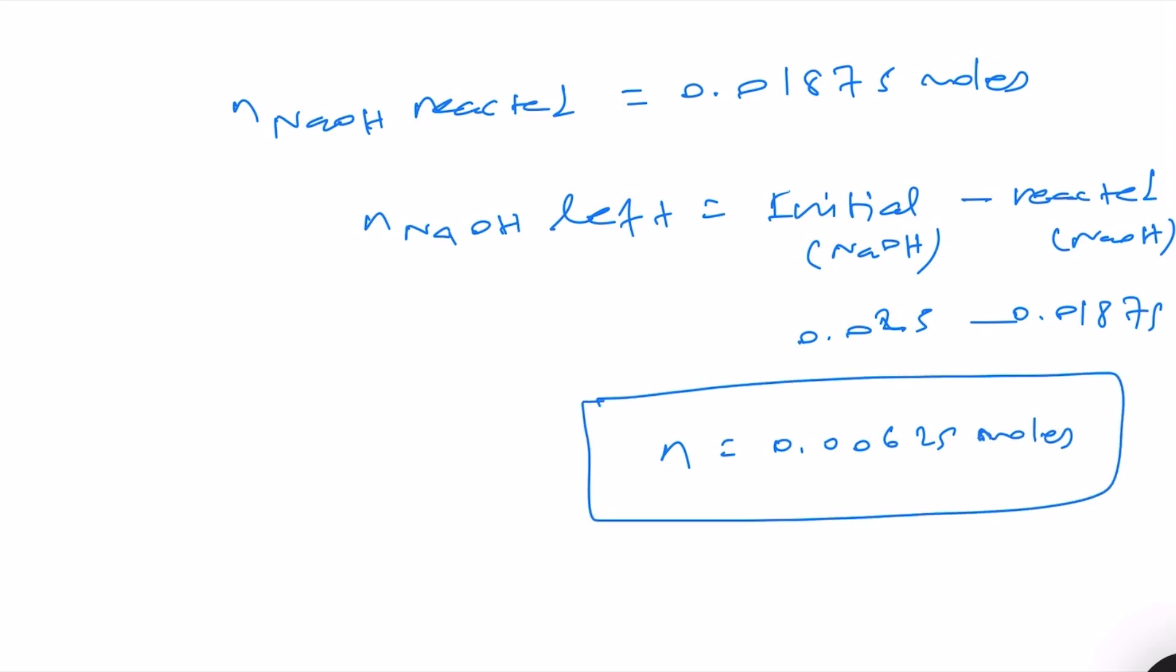We know that n equals mass divided by molar mass and therefore mass is equal to n times molar mass. This means 0.00625 moles times 40 gram per mole and that is equal to 0.25 gram.